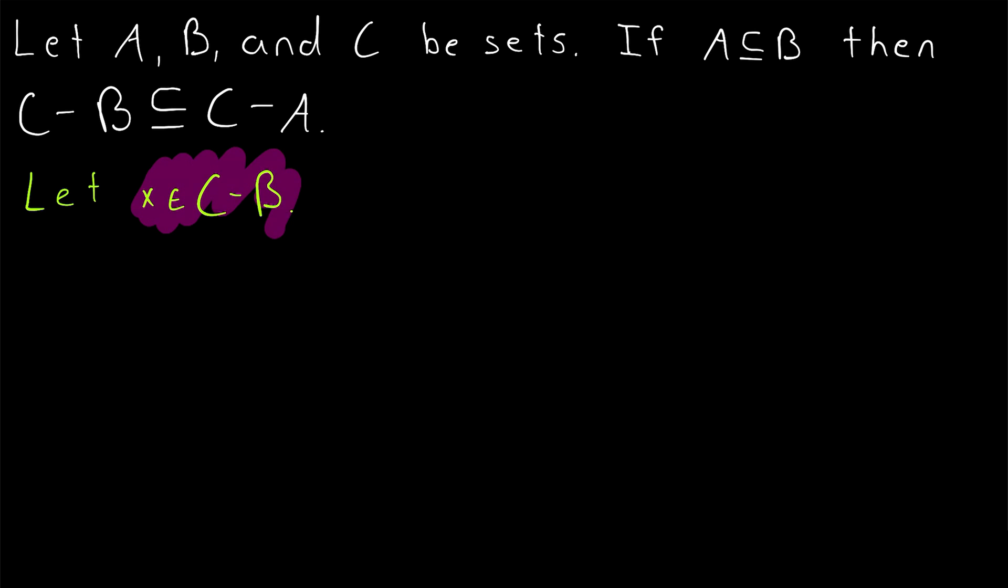All right, so what does it mean for x to be an element of C minus B? Well, by definition of set subtraction, that means that x has to be an element of C, and since it's in C minus B, x can't be in the set B. Otherwise, it would have been subtracted, and thus not in the set C minus B.